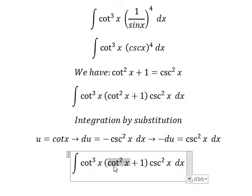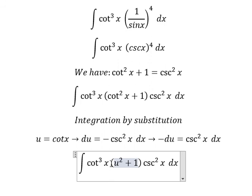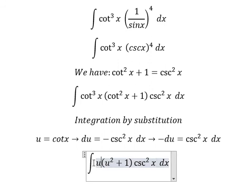So this becomes u times u. Csc² x dx becomes negative du.